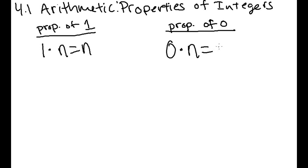For 0, if you have 0 times any number n, that's just going to be equal to 0.